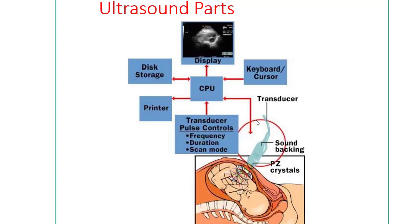The ultrasonography machine parts include a display, disk storage for image storage, a central processing unit, keyboard, cursor — just like a computer — and an additive printer for printing images. There is also a transducer or probe used to pass the ultrasound rays, and transducer pulse controls for frequency, duration, and different scan modes.